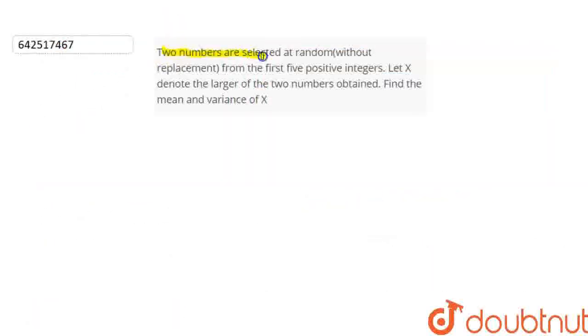Two numbers are selected at random without replacement from first five positive integers. Let X denote the larger of the two numbers obtained. Find the mean and variance of X.